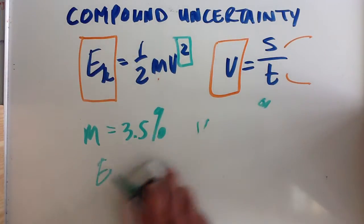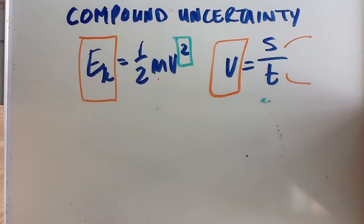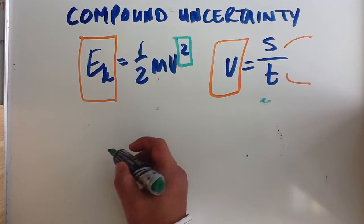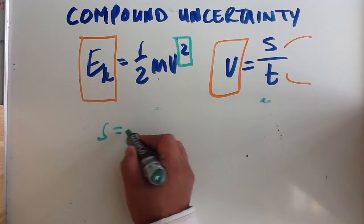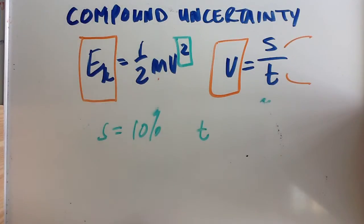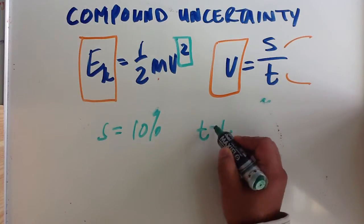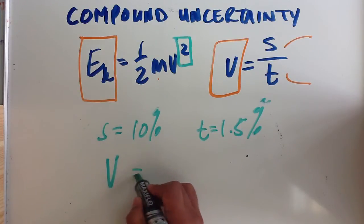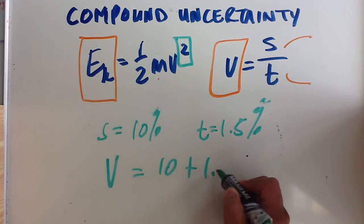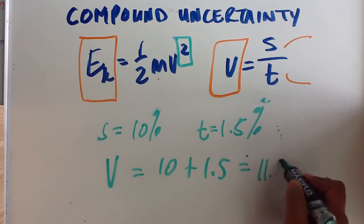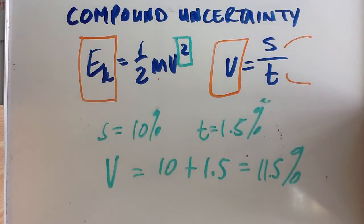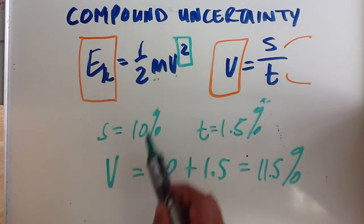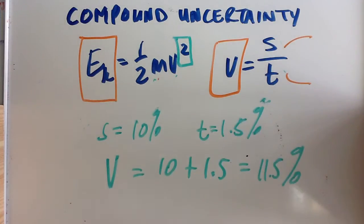If we think about the velocity case, if we're trying to work out velocity, if we say that displacement is 10%, and the time is 1.5%, we would just take 10 plus 1.5, and the percentage uncertainty for the velocity is 11.5%. So in both cases, you just add that to that. You add the percentage uncertainties of both.